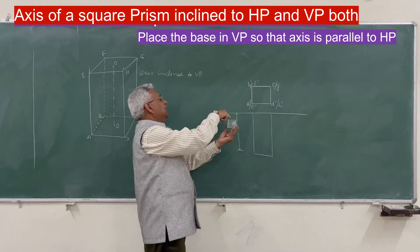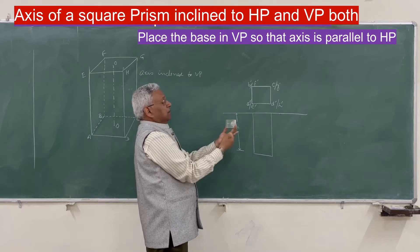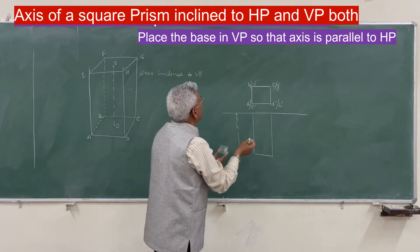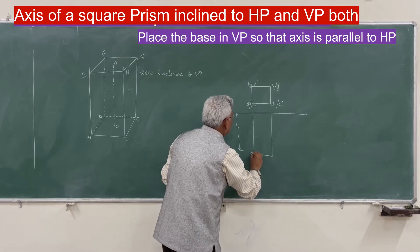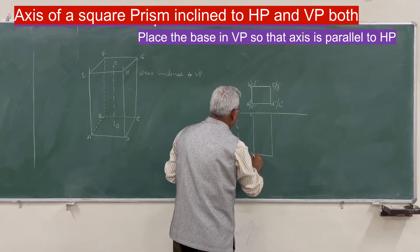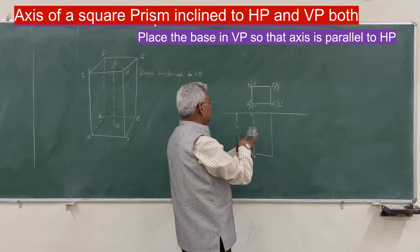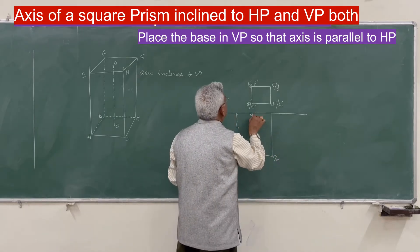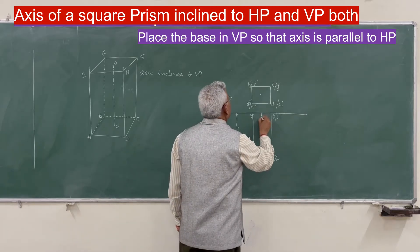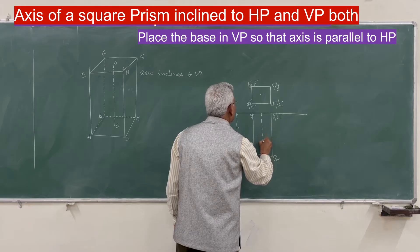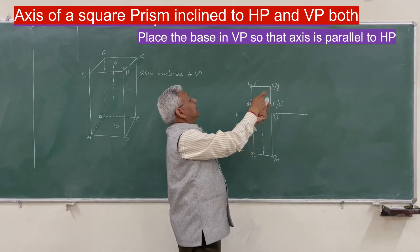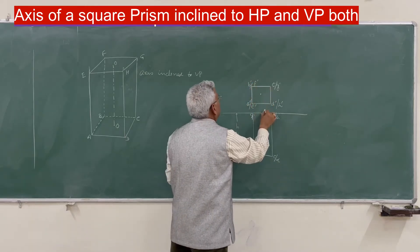So in the plan, the vertices A, B, C, D, E, F, G, H are projected. When you look from the top, you see a rectangle, where A and E coincide, and B and F coincide. C, D, G, H are also marked. The axis O-O appears as a point in the plan because the solid is kept in the vertical plane with the axis perpendicular to it.